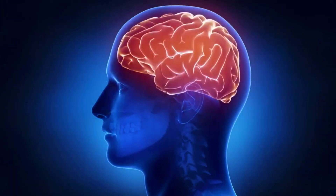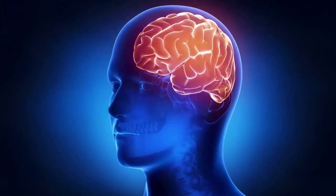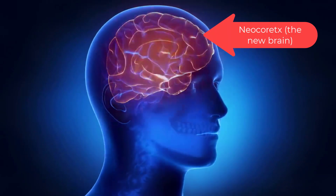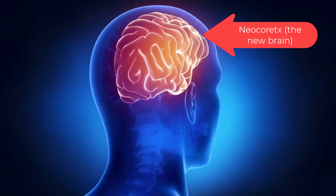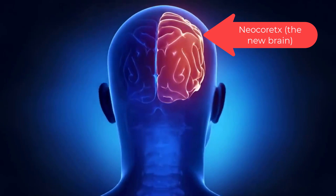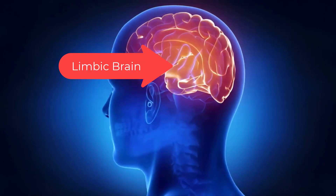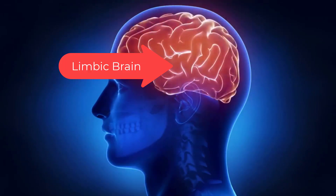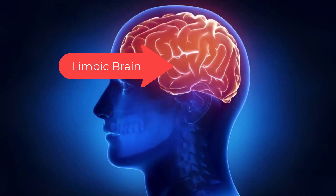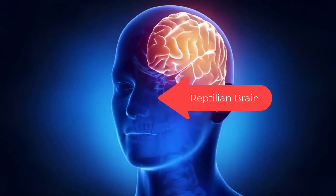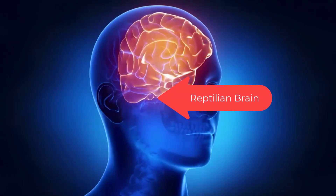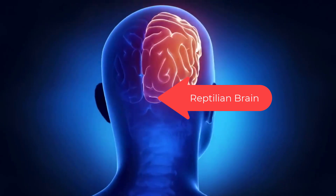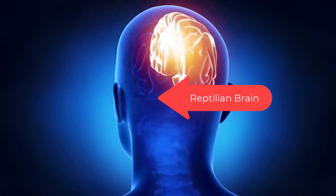Your brain has three basic layers and only one real decision maker. The new brain, the neocortex, thinks and processes rational data. The middle brain, the limbic brain, feels emotions and is our instinct for fight or flight response.